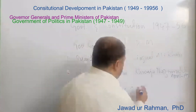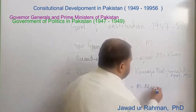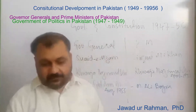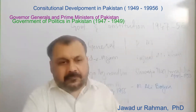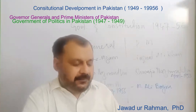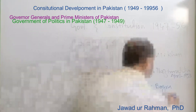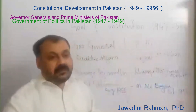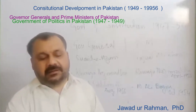Another Prime Minister was then appointed — Muhammad Ali Bogra, who had been serving as Pakistan's ambassador in Washington. He was brought in to govern the country and to draft a constitution. He was about to present a draft constitution in 1954, but in October 1954 Ghulam Muhammad removed him — and not only him, but dissolved the entire constituent assembly.